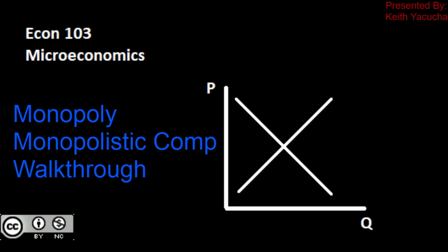Welcome back to Econ 103, Introduction to Microeconomics. In this video, we're going to be taking a look at a walkthrough for monopoly or monopolistic competition. What we're going to be really looking at is the math side of this. It doesn't really matter if we're talking about monopoly or monopolistic competition — any firm with market power is going to have a similar structure, mathematically speaking. The real difference comes down to the elasticity of the demand curves, which will be beyond what we're looking at in this video.